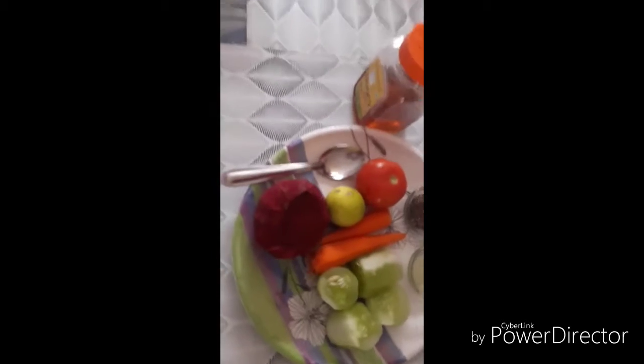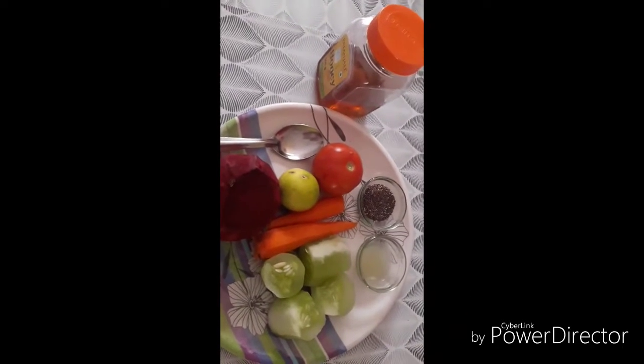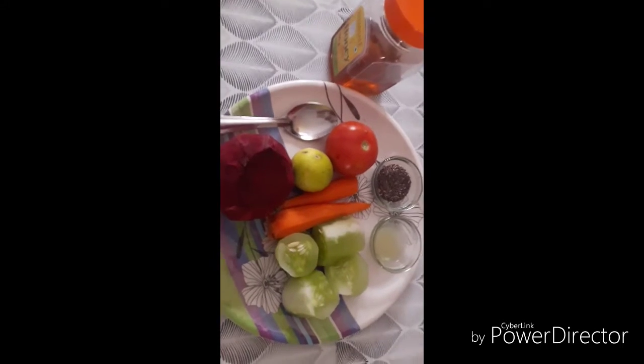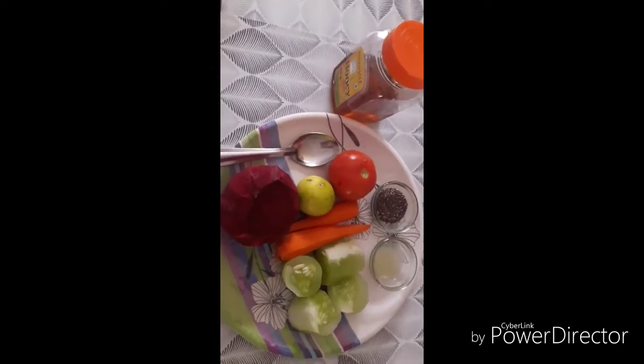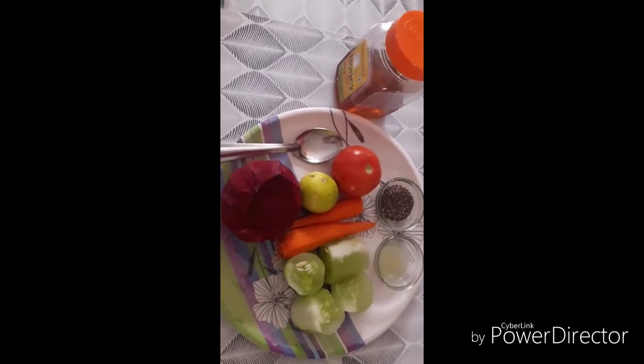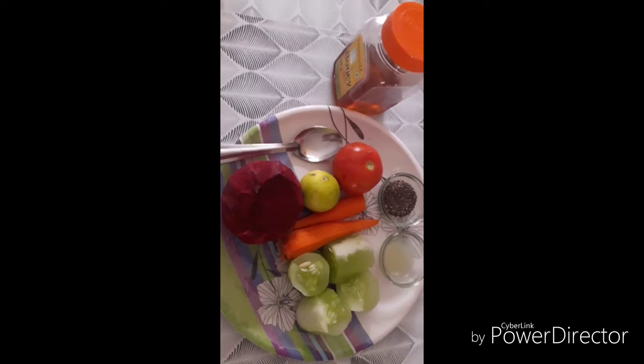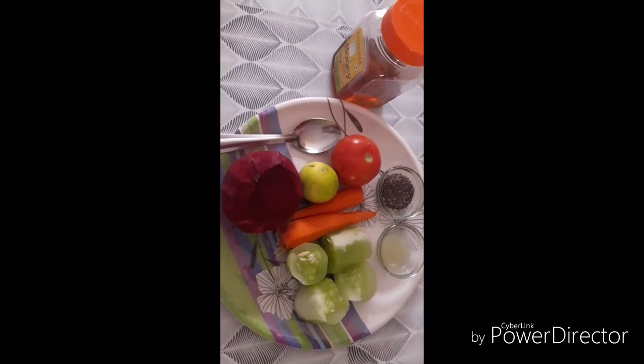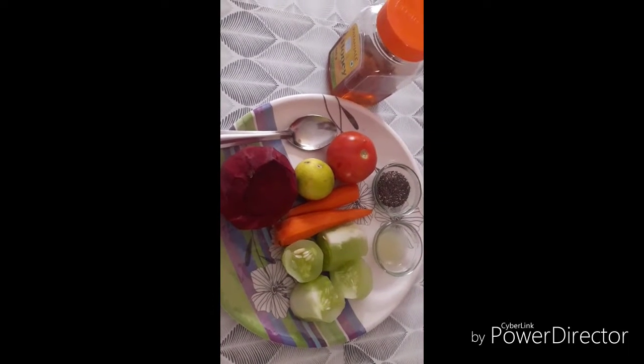Soak the chia seeds for 10 to 20 minutes. Then put the chia seeds in a blender and add the juice.